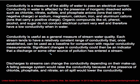Discharges to streams can change the conductivity depending upon their makeup. For example, a failing sewage system would raise the conductivity because of the presence of chloride, phosphate, and nitrate, whereas an oil spill would lower the conductivity. So while conductivity measurements don't quantify direct amounts of ions, they can be a useful measure of indicating whether a system is undergoing some kind of change which may very well be due to some source of pollution.